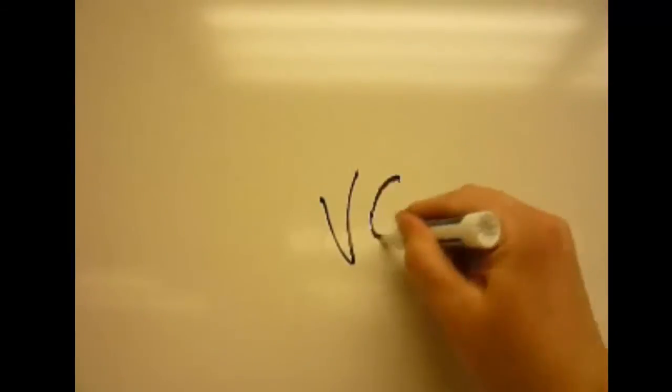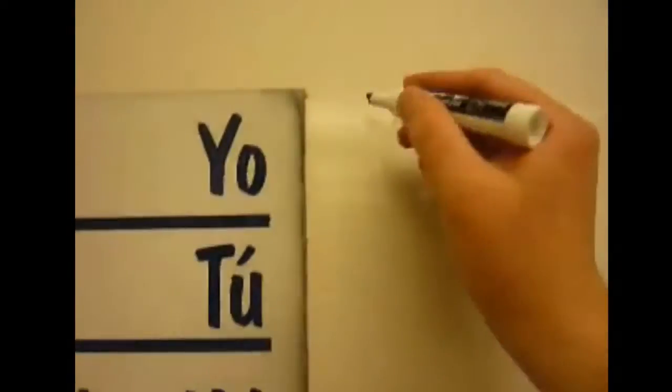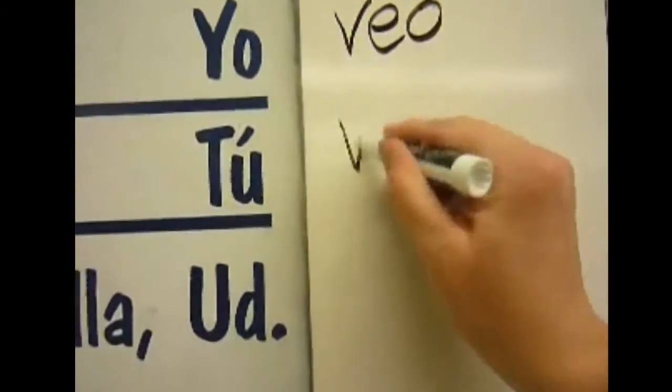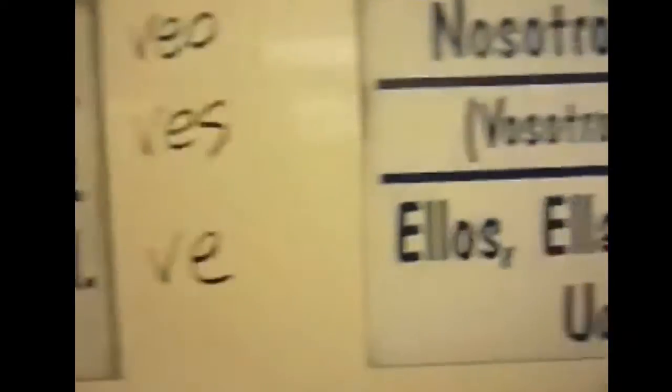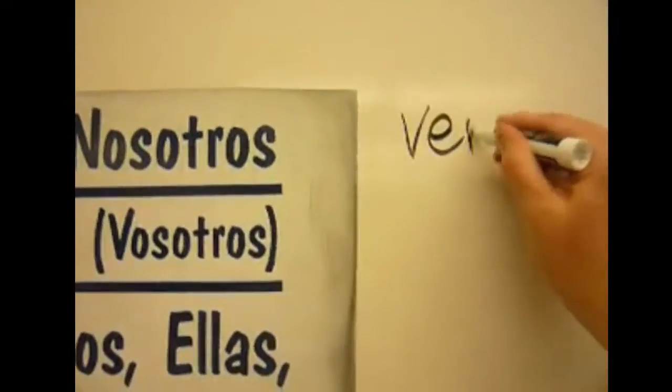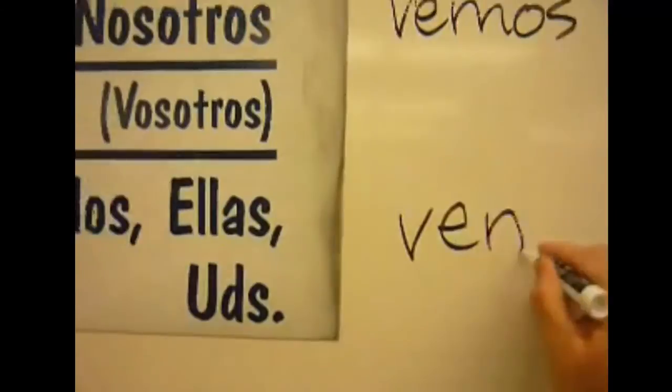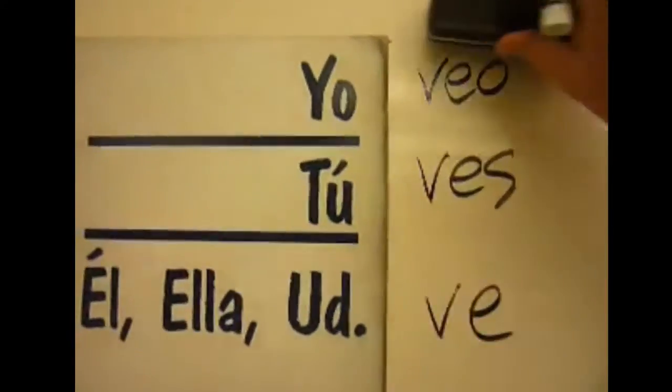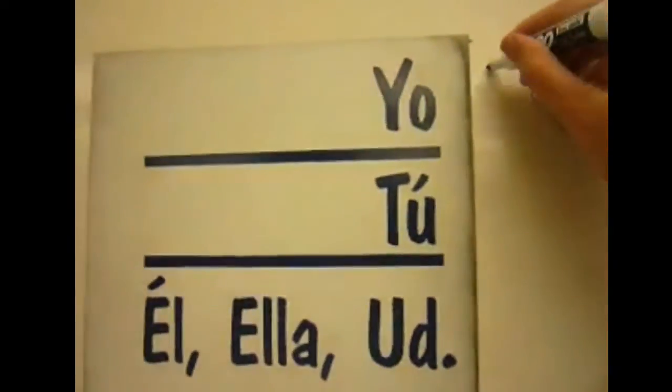The last batch here is the verb ver. Ver. Ver. To see. To see. Here we go. We'll get rid of these and we'll just go right into the imperfect.